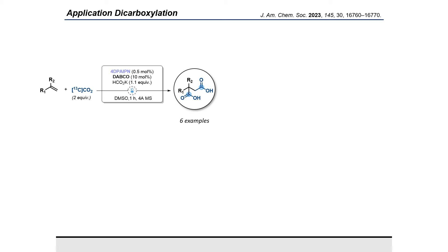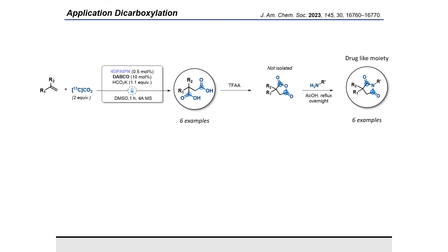Using those conditions, and in only one hour, we managed to obtain six examples of biscarboxylated products. We were quite interested in this kind of compound because, in a simple two-step cyclization, you can access this kind of heterocyclic core.